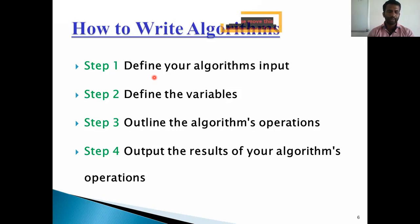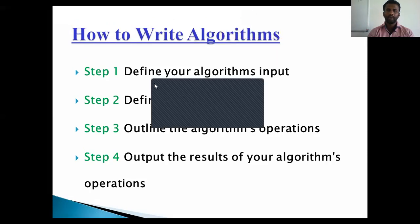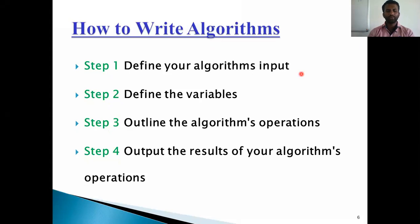Then second step, define the variables. What are the variables we are using? Those variables we want to define here. Algorithm's variables allow you to use it for more than one place. We can define two variables for rectangle height and rectangle width as height and width. We should use meaningful variable names. For example, instead of using h and w, use height and width as variable names.